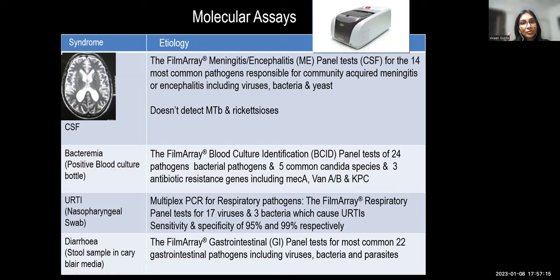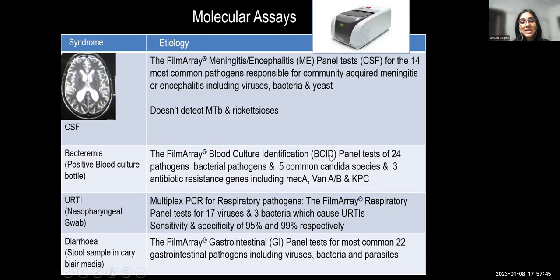Other molecular assays available for different syndromes: URTI and LRTI panels from nasopharyngeal swabs — the LRTI BioFire panel can also be performed on pleural effusion or empyema specimens. A FilmArray GI panel is available for diarrhea. Bone and joint infection panels are now also available. The BCID (blood culture identification) panel detects 24 common bacterial pathogens from positive blood cultures.